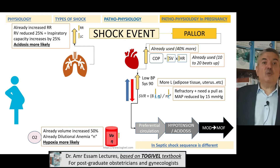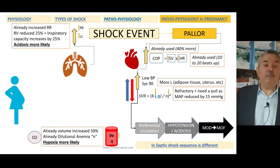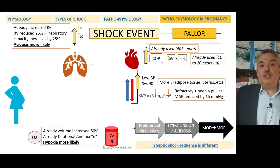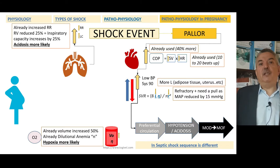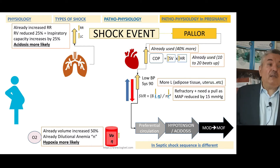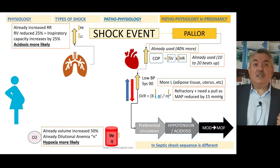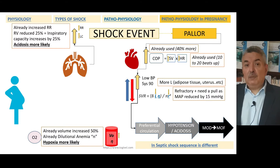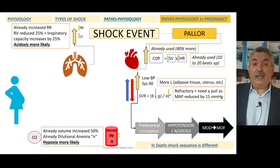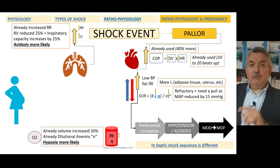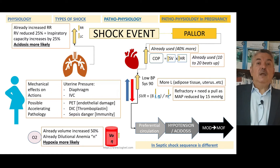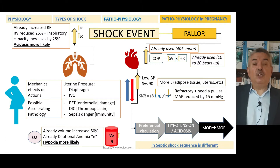The plasma volume is already increased by about 50% in the third trimester, and viscosity is decreased because of hemodilution, so hypoxia is more likely in the obstetric patient. In the obstetric patient, acidosis is more likely, hypoxia is more likely, and you are effectively hand-tied — the steps the body takes to overcome deficient tissue perfusion are all hindered and reduced by the changes of pregnancy.